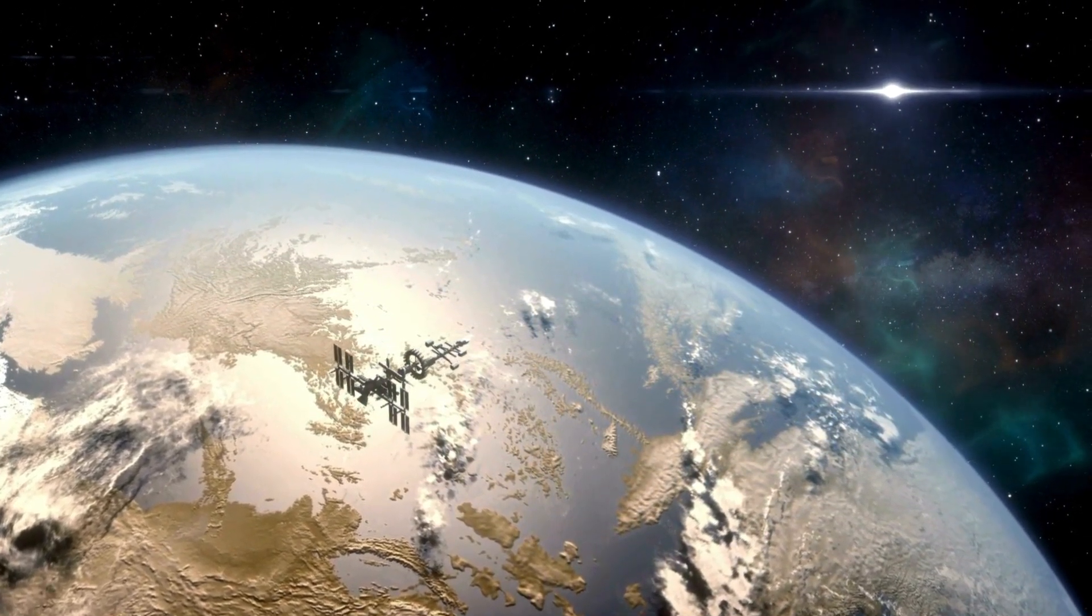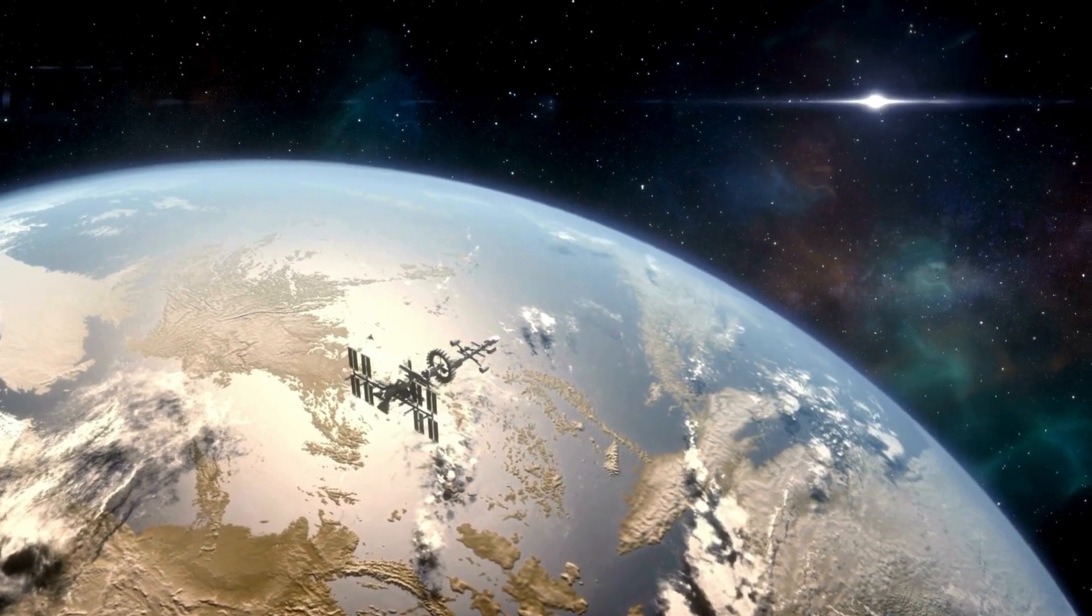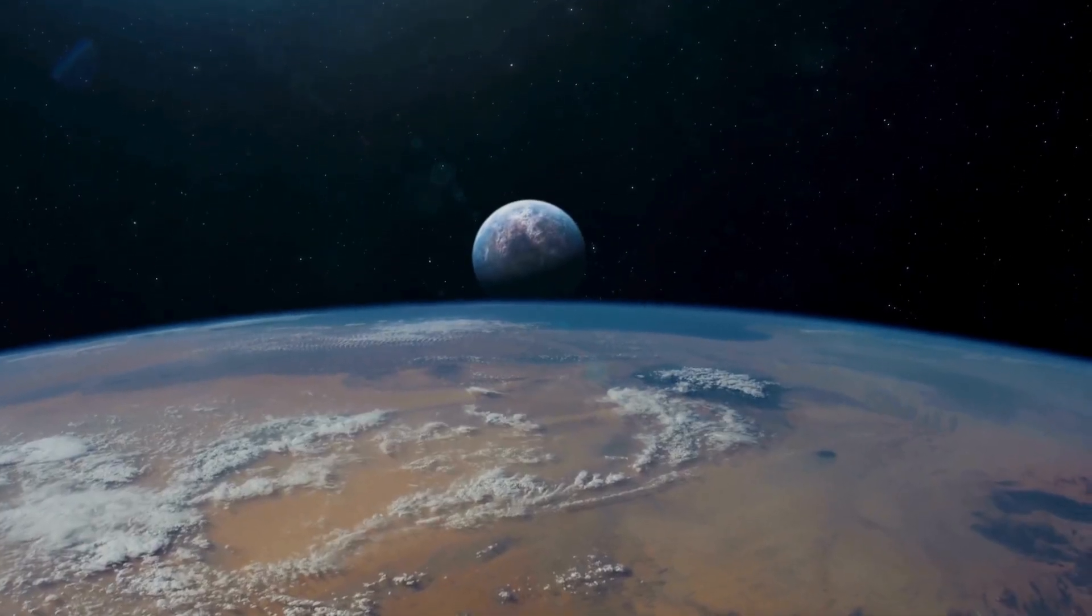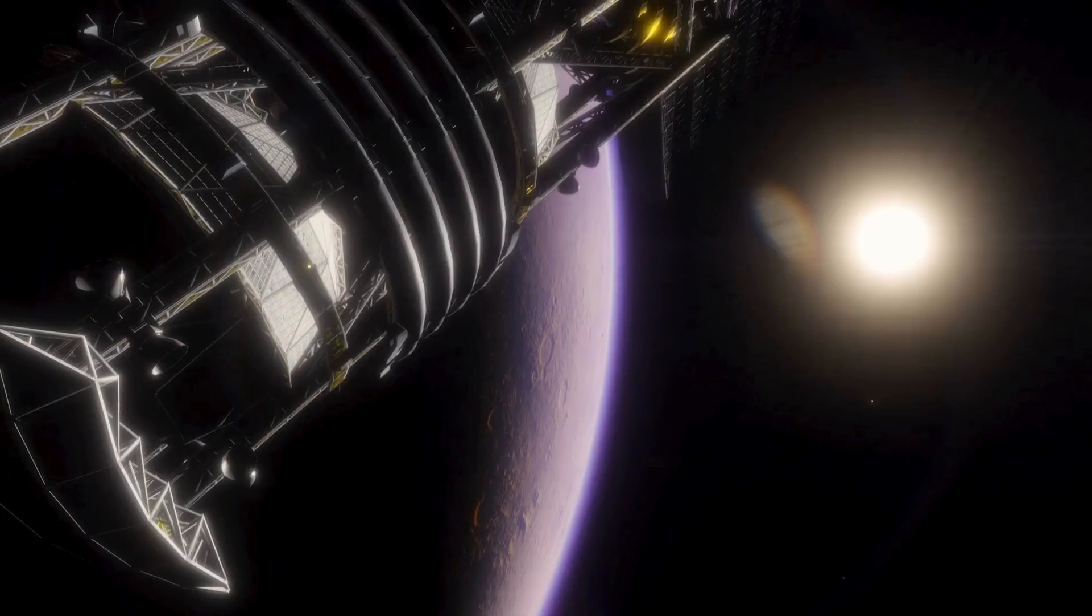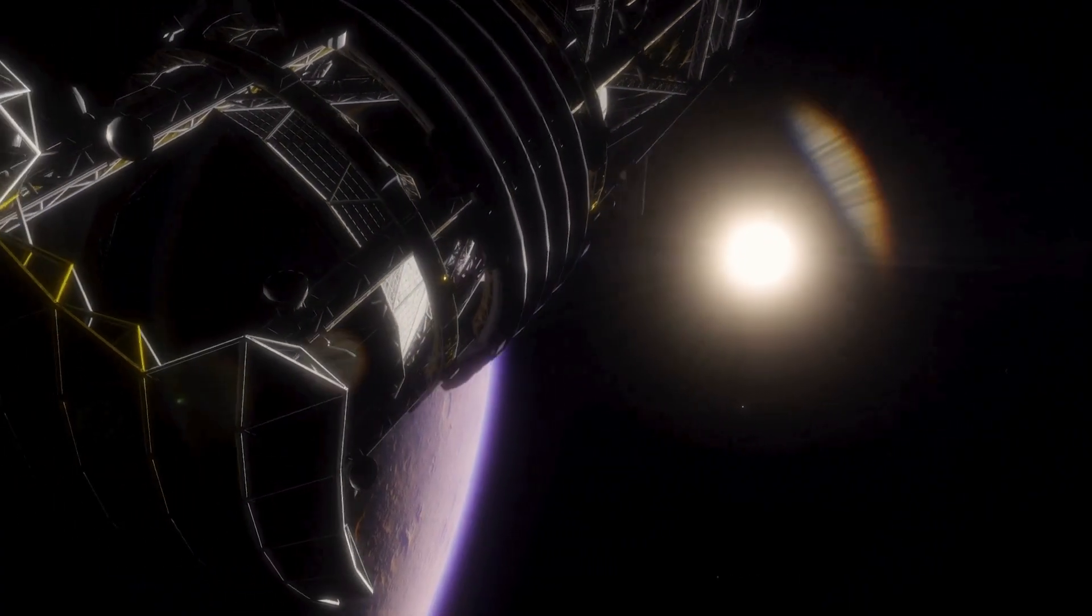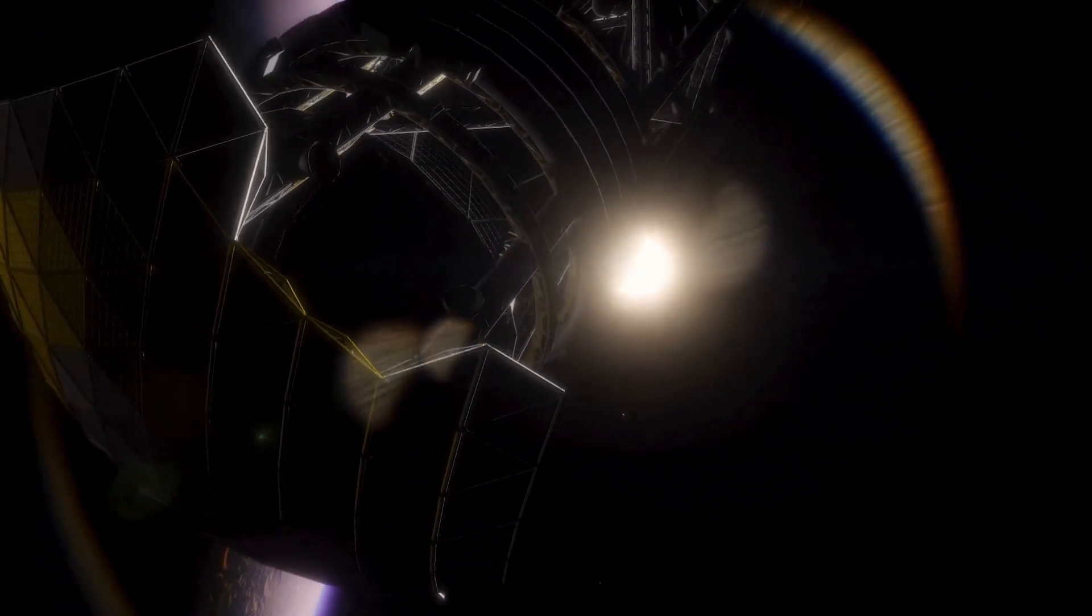But wait, there's more. Proxima b isn't alone in its orbit around the red dwarf star. It has a companion, Proxima Centauri c, which could uncover even more secrets the star system holds. Perhaps there is another companion that we haven't found yet.